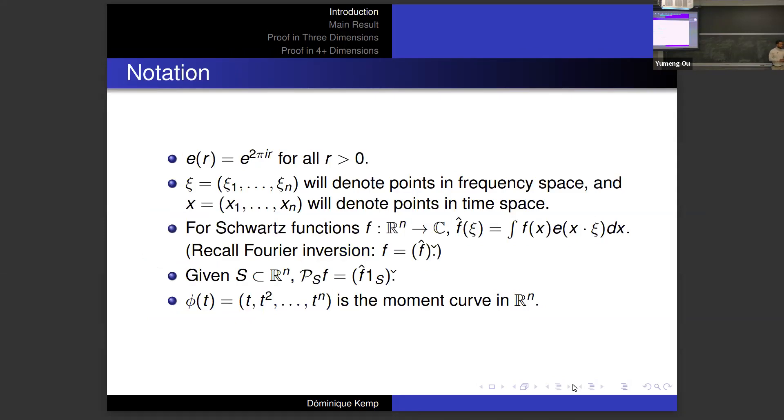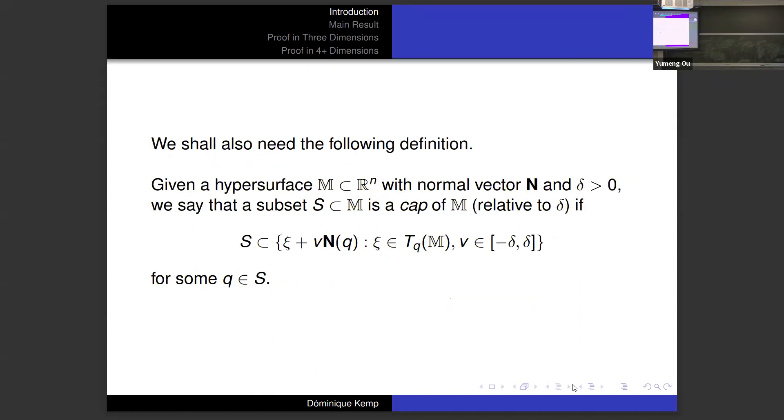This is the notation that will recur throughout this talk. We have the usual abbreviation for the complex exponential function. There will be the usual distinction between points in frequency space and time space. All functions here will be in Schwartz space so that in particular Fourier inversion applies. The Fourier projection is a core tool that we need here. You're just taking the Fourier transform of any function F and then restricting the frequency domain to some set S and then transforming back. Phi will be a symbol always used for the moment curve in R^n.